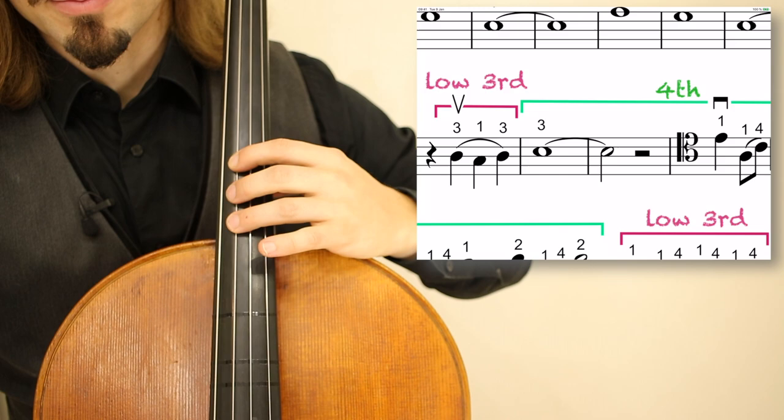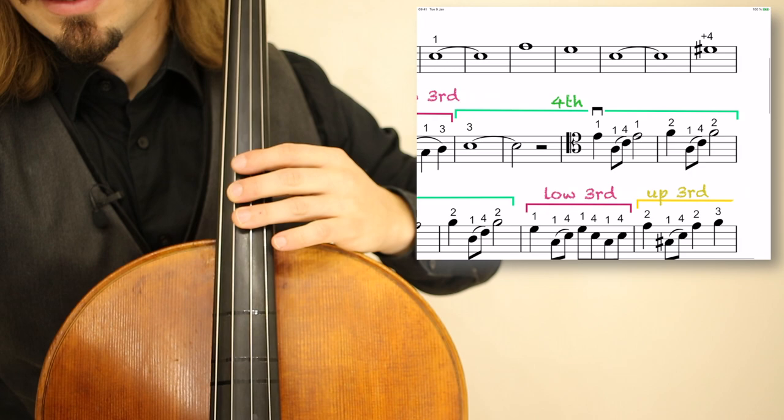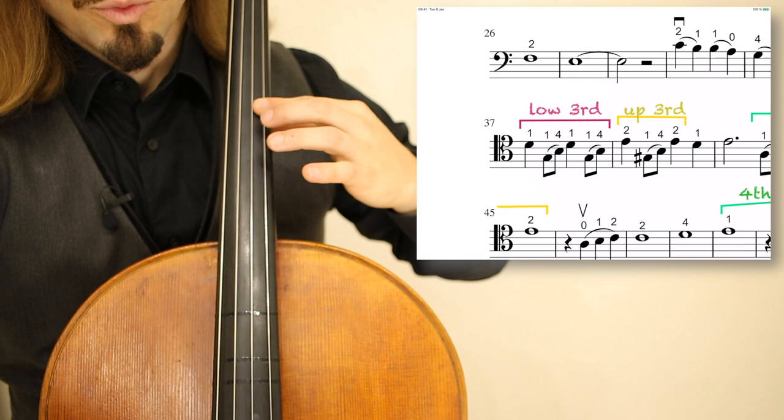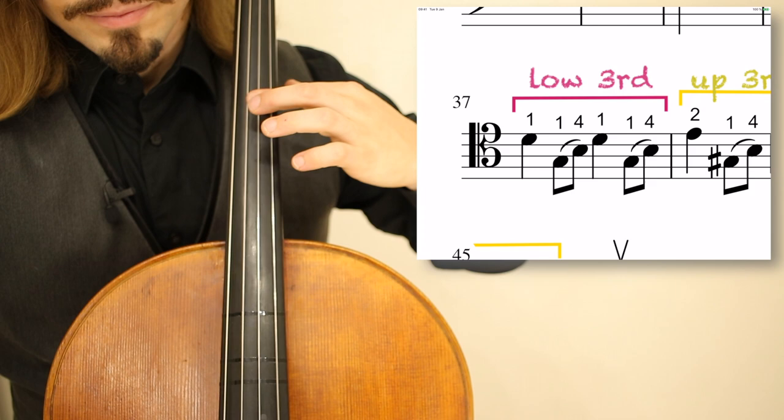Then shifting to the fourth position. Continuing measure 35 is in the fourth position. Shifting back, one on the D, extended out in the lower third position.